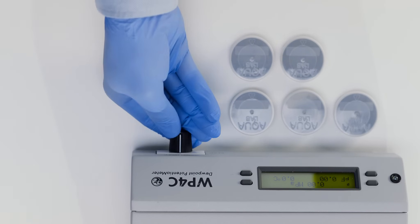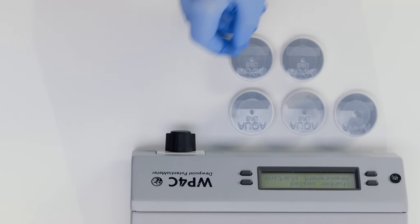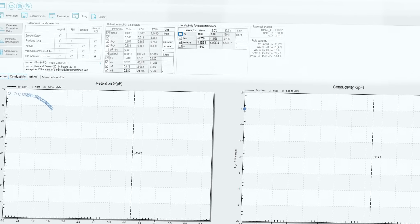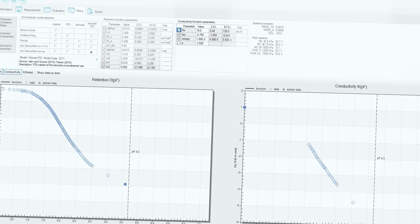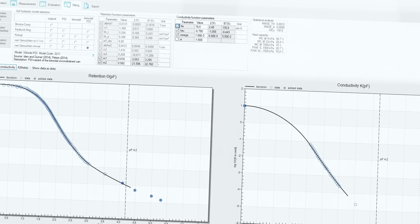Finally, measure all six samples with the WP4C to complete the dry end of the moisture release curve. Each measurement sets the standard for precision, and the whole process is more streamlined and less error-prone than ever before.